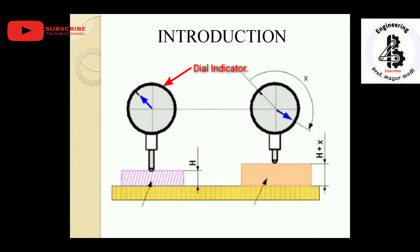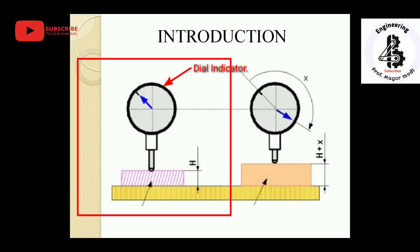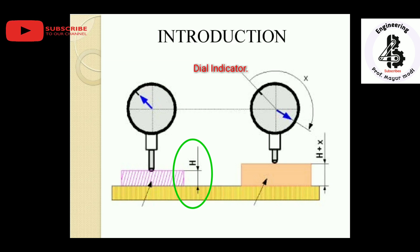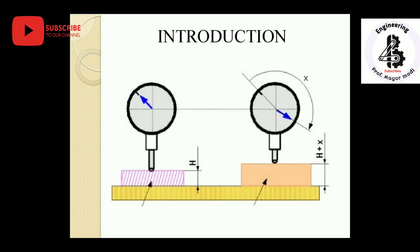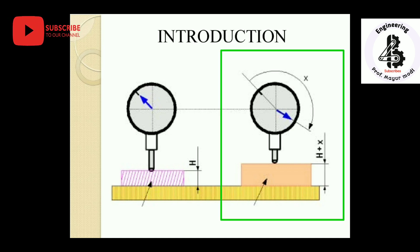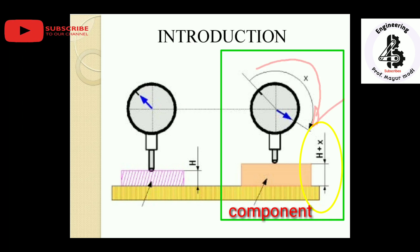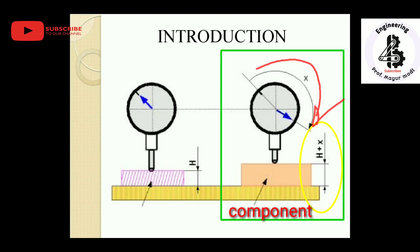As you can see here, the dial indicator is in the first position measuring the height H of a standard component — shown in blue — giving a standard indication on the dial gauge. The standard component is then replaced by the test component, which has a height of H plus x, where x is the additional length. The dial gauge indication changes by x, allowing you to identify the deviation from the standard.